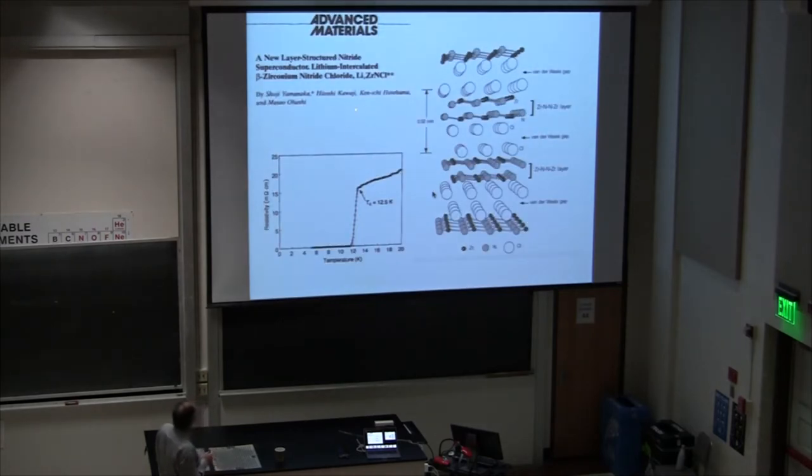Here's another interesting material, zirconium nitrogen chlorine, ZrNCl. It forms this interesting layer here, zirconium-nitrogen-zirconium. There's a van der Waals gap, it's highly cleavable. When you intercalate lithium, you can dope it electronically and it superconducts with a TC of 12.5 degrees. I'll return to this, remember this material, because I'll return to it in a little while. It goes in the van der Waals gap.